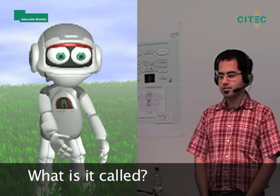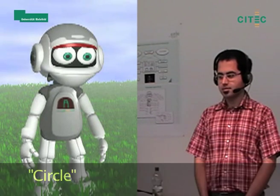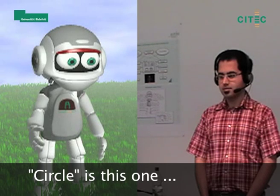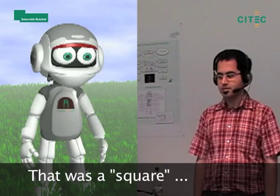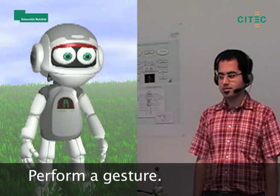Wie heißt das? Kreis. Das hier ist ein Kreis, falsch geraten, das war ein Rechteck, du bist wieder dran, mach eine Geste vor.